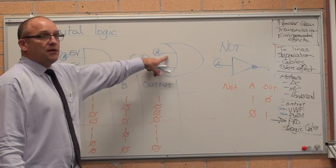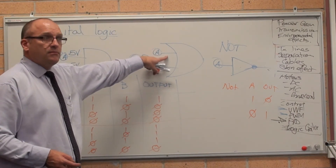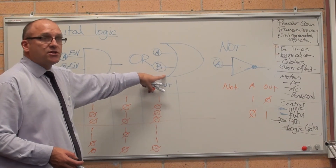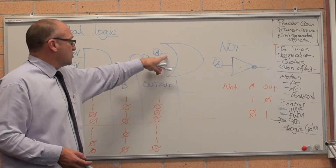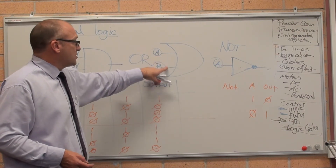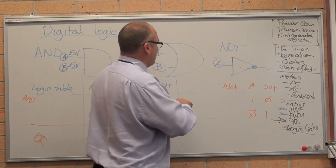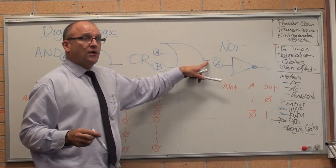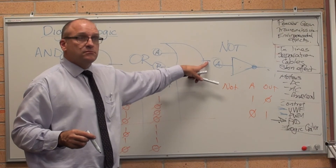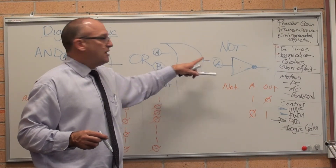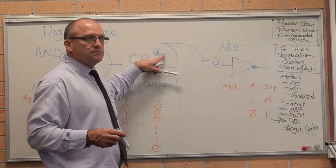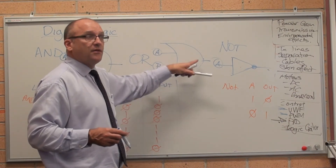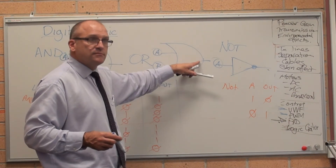So this one here might be: is it night time? And has somebody triggered the motion sensor? If it's night time and somebody's triggered the motion sensor, then turn on the night light. If it's day time and the motion sensor is triggered, who cares? Leave it off.